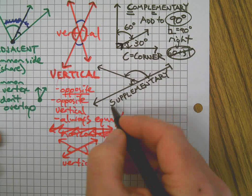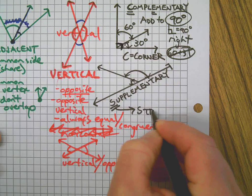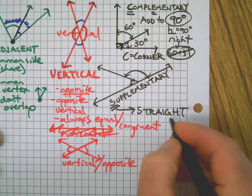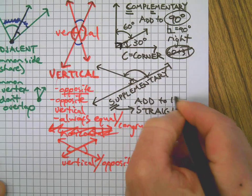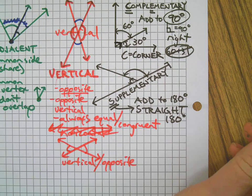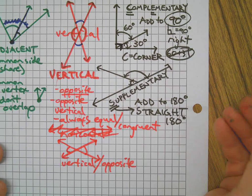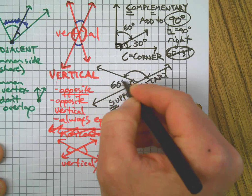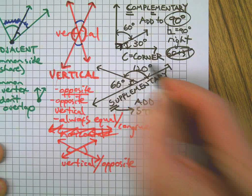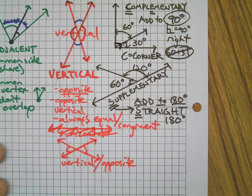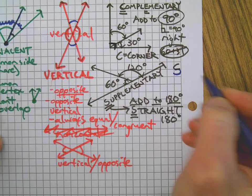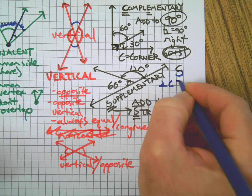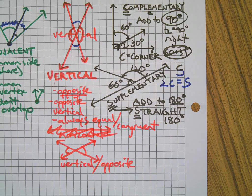Finally, supplementary angles. Think of S for straight — a straight line is 180 degrees. Supplementary angles add to 180. Anytime you have a straight line with two angles on the same side, they are supplementary. For example, if one angle is 60 degrees, the other must be 120, because they need to add to 180. Another way to remember: take a C, add another C backwards and upside down, and it makes an S — two C's equal an S.